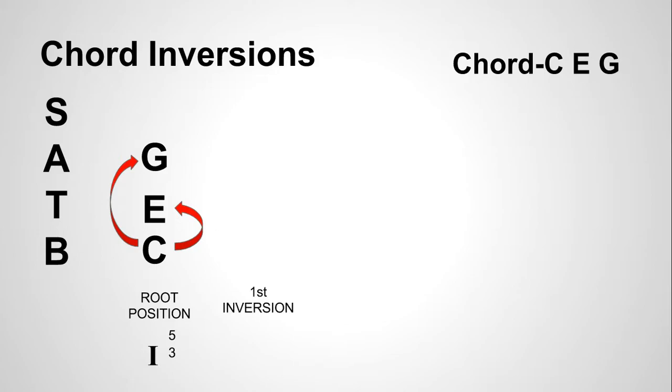Now, if we look at first inversion, that was E, G, C. Let's look at what we have here. We have our I chord again, because we're in the key of C, we're going to say, and it's the I chord. The distance, the interval between E and G is a third, so we superscript a three again.